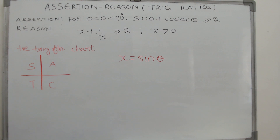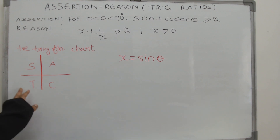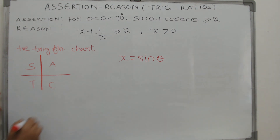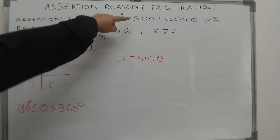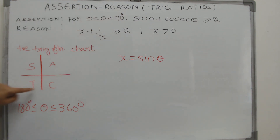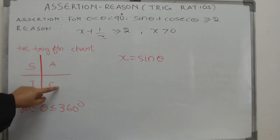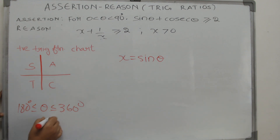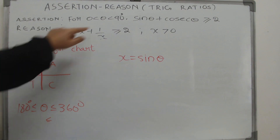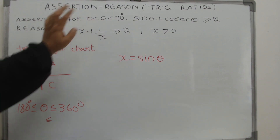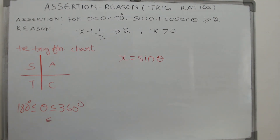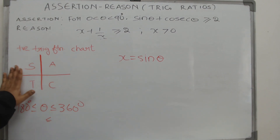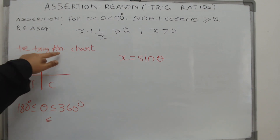In the first quadrant, your sine and cosine are always positive. If theta were between 180 and 360 degrees, you cannot apply this inequality, because in that region both sine theta and cosine theta can be negative — less than or equal to zero. That is why the acute angle condition ensures sine theta is always greater than zero. You are familiar with this chart, right?